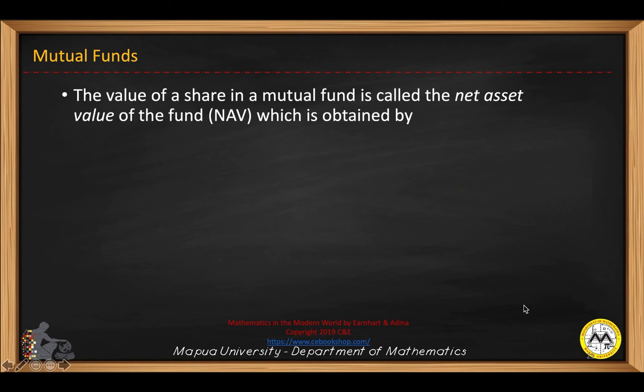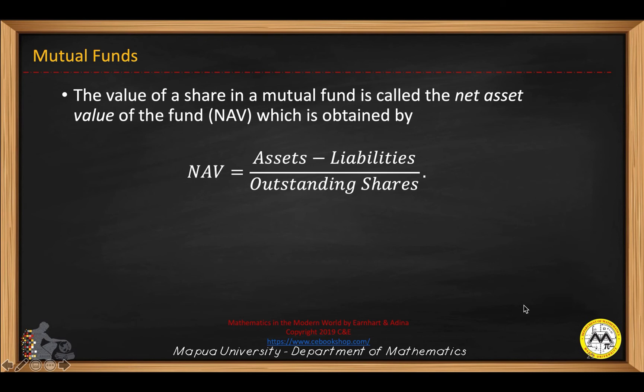The value of a share in the mutual fund is called the net asset value of the fund, which is obtained by the following formula. The net asset value is equal to the assets minus the liabilities, divided by the outstanding shares.